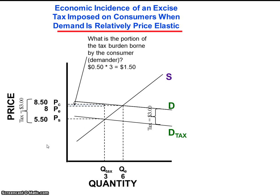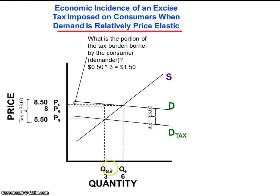The economic burden of the tax borne by consumers is very small when demand is price elastic. Here, it is $8.50 — the price effectively realized by consumers — minus the equilibrium price of $8, or $0.50, times the quantity in the tax market, which is $3, equaling $1.50.